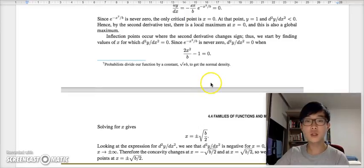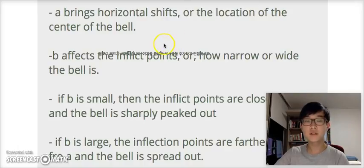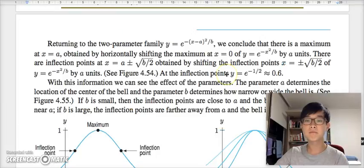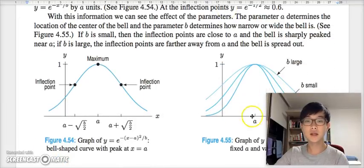Let's go over some major key points about the bell-shaped curve. The parameter a brings horizontal shifts or the location of the center of the bell. Parameter b affects the inflection points or how narrow or how wide the bell is as it is related to the inflection point. If b is small, then the inflection points are close to a and the bell is sharply peaked. If b is large, the inflection points are farther away from a and the bell is spread out.